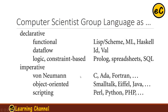Computer scientists group languages into the following two major ranges. The first one is declarative. The second one is imperative. Imperative means by order, or you can call it by control structure.